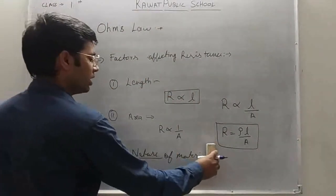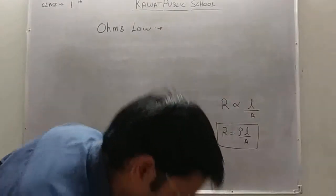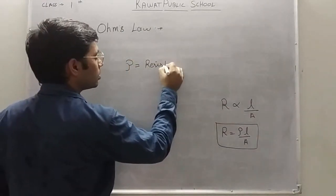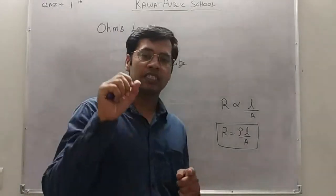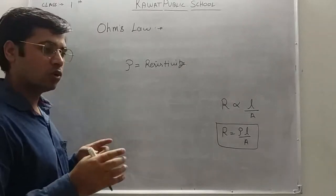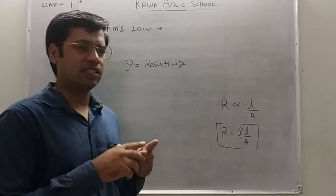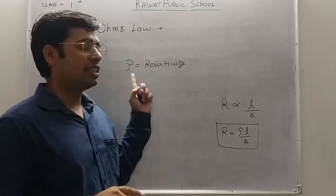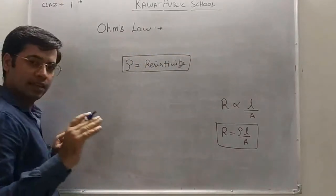In this formula we got a constant called rho, which is known as resistivity of the material. Resistivity does not depend upon the shape and size of the material. It depends only on physical quantities like temperature and pressure. If we change the temperature or pressure, resistivity will change. But if we change the shape — increasing or decreasing the length or area — resistivity will not change. So resistivity is a property that depends only on the nature of the material.